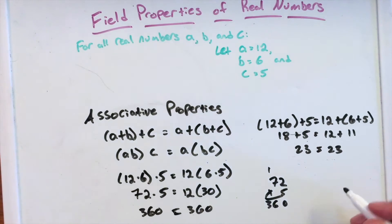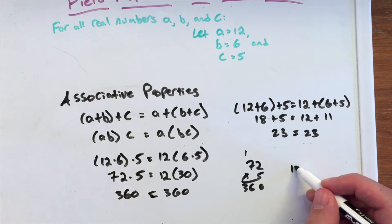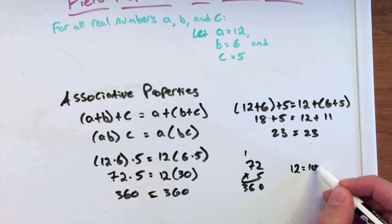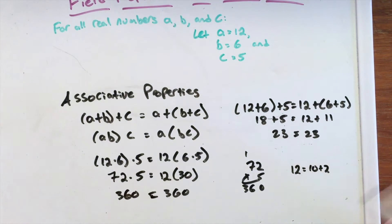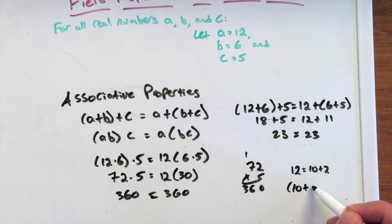A little side math, a little fun fact here. 12 is equal to 10+2. So let's use our properties here. We can say the same thing as saying (10+2)×30. And I'm going to distribute it kind of here.